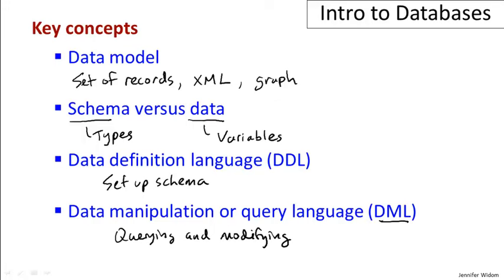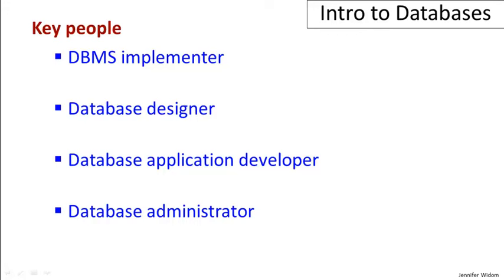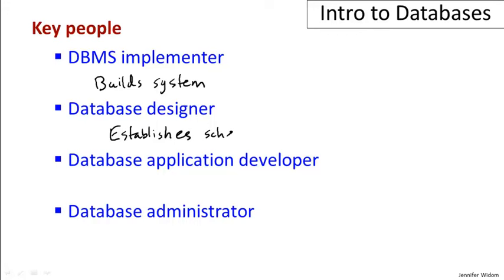Now let's talk about the people involved in a database system. The first is the database implementer — the person who builds the system itself. That's not going to be the focus of this course. The next is the database designer, who establishes the schema for a database. When you have an application with a lot of data involved, you need to figure out how to structure that data before building the application — that's the database designer's job. It's a surprisingly difficult job when complex data is involved. Once you've established the structure, it's time to build the applications or programs that run on the database, interfacing between the user and the data — that's the job of the application developer.